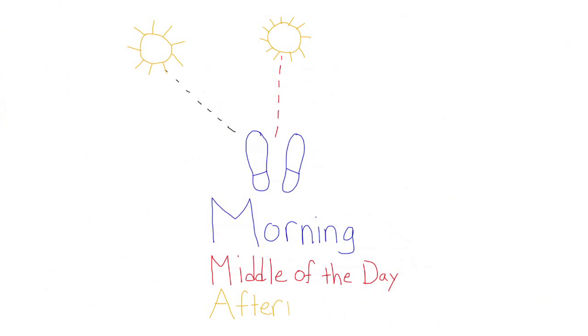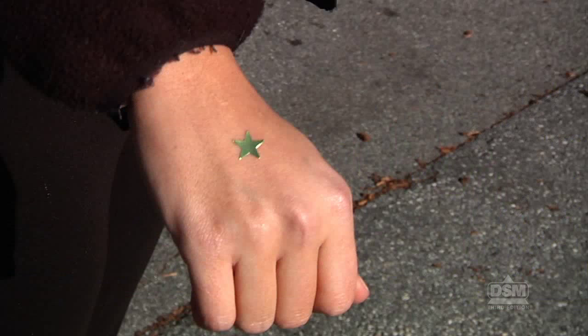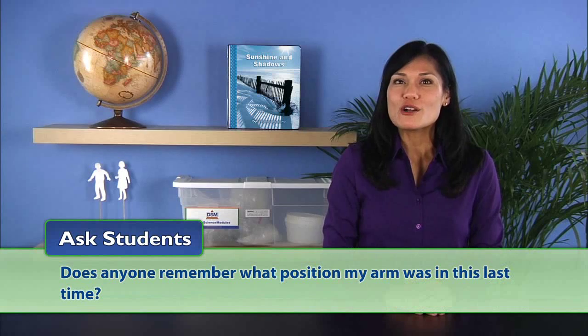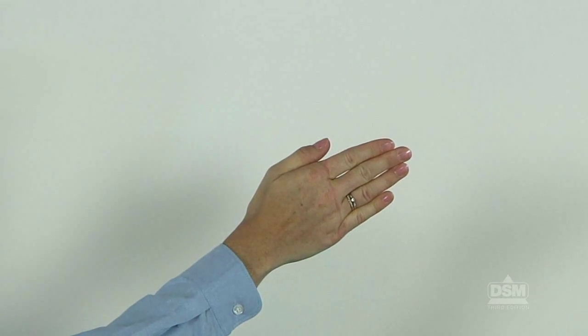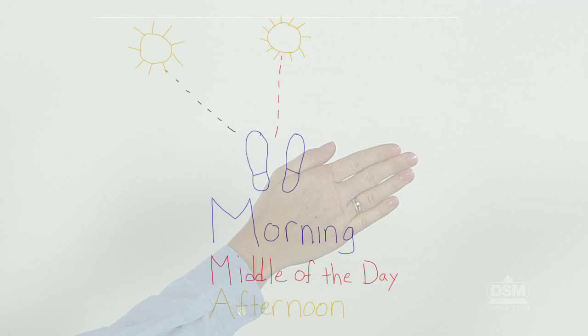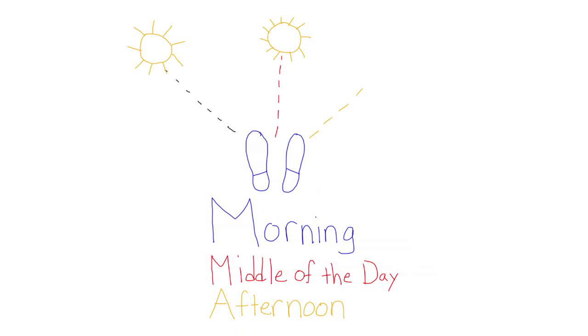Back in the classroom, write 'afternoon' under the 'middle of the day' heading in yellow. Ask students which side was the sun on. If students need prompting, remind them that you put stickers on their hands on the same side as the sun. Ask students if anyone remembers what position your arm was in this last time. Again, move your arm until it is positioned at the correct angle. Then draw a dotted line from the feet to the place that represents the correct position of the sun in the sky and add the third sun to your picture.